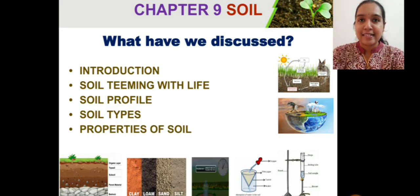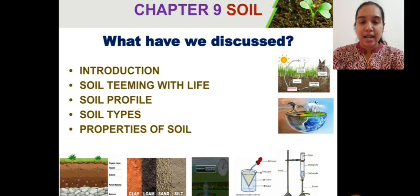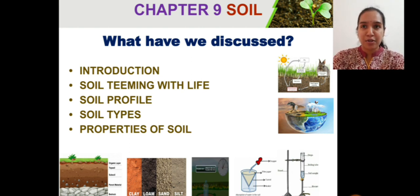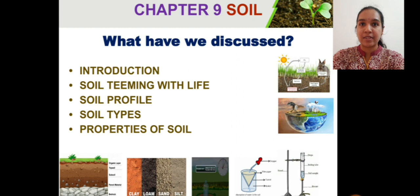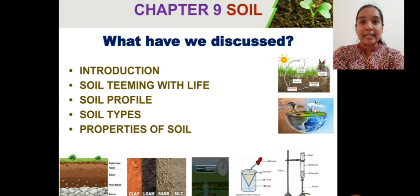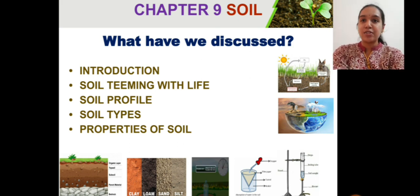Like in every class, let's have a quick recap of this chapter. We learned the importance of soil in the introduction, learned how soil has a great bond with life, what are the different horizons of soil, different soil types — mainly sand, clay, silt and loam — and the properties of soil, where we theoretically learned certain activities to identify percolation rate of water in soil, moisture in soil, and absorption of water by soil.